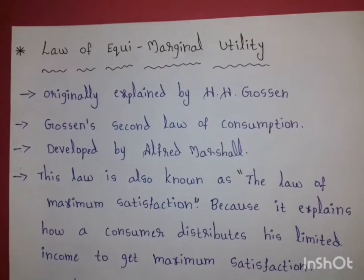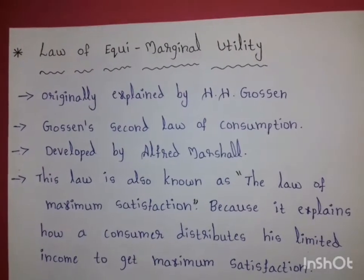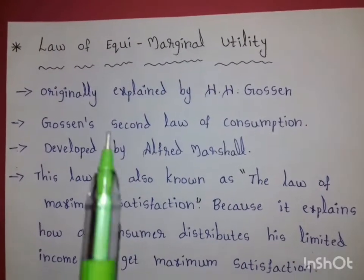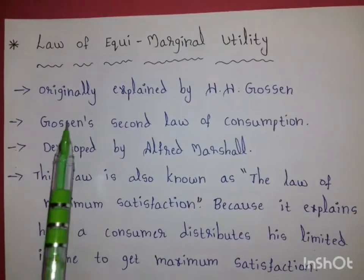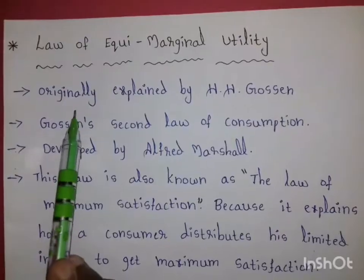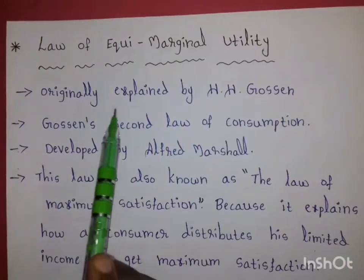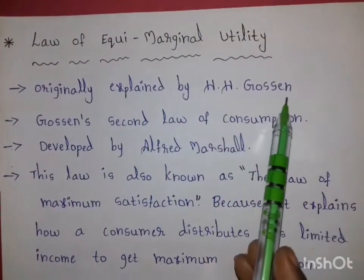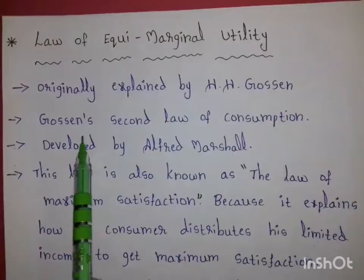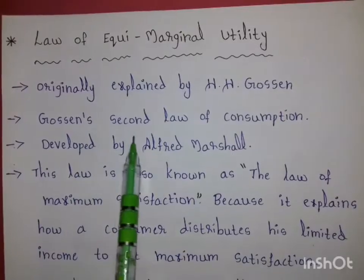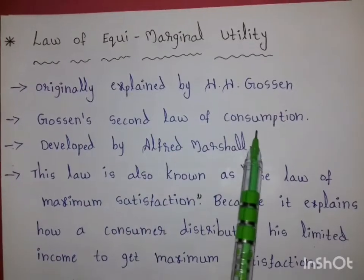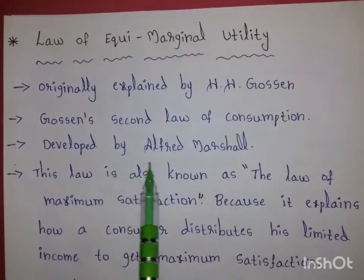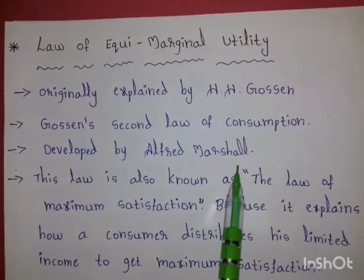Hello everyone, today our topic is the law of equi-marginal utility. The law of equi-marginal utility was originally explained by H.H. Gossen, hence it is called Gossen's second law of consumption. Later it was developed by Alfred Marshall.